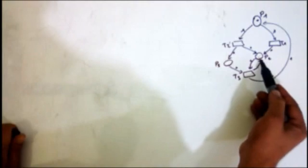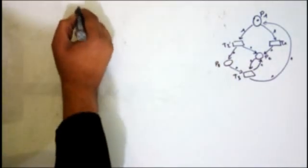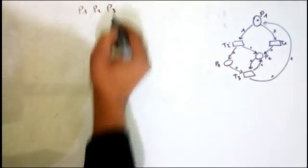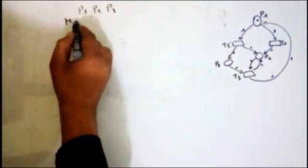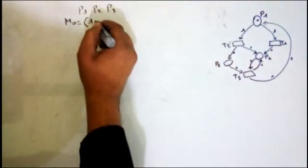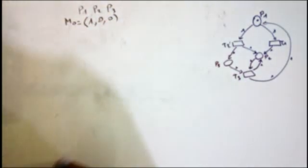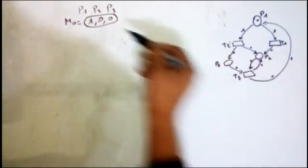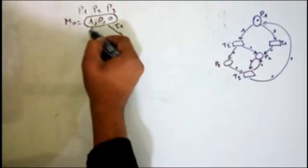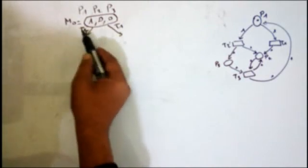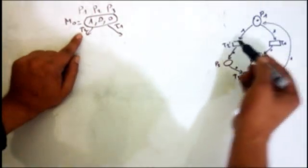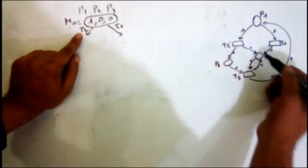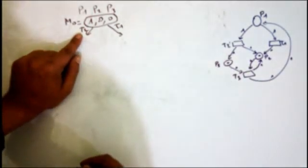So we have this Petri net. Let's initialize the first marking: we have one token in P1, zero in P2, and zero in P3 — just three places. The initial marking M0 equals (1, 0, 0). From this marking I can fire T1 or T2. When I fire T2, I remove the token from P1 and add one token in P2 and one in P3.